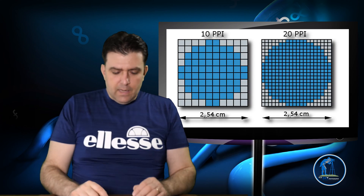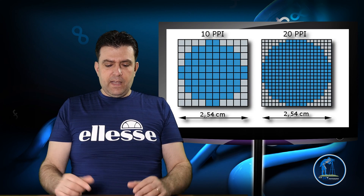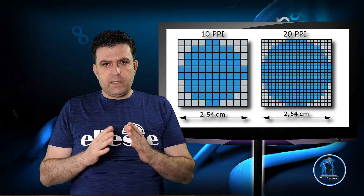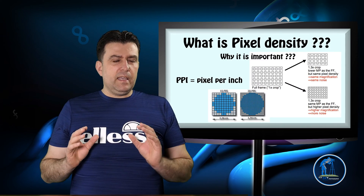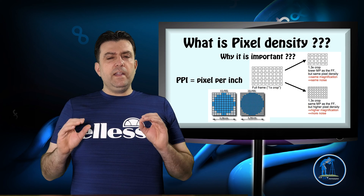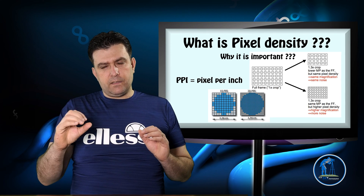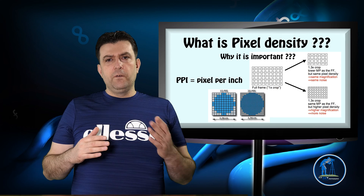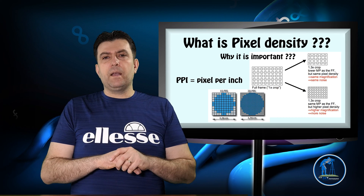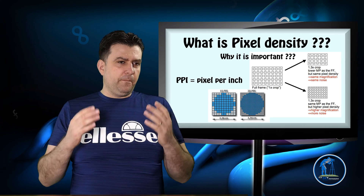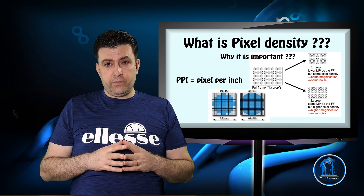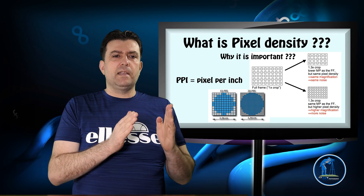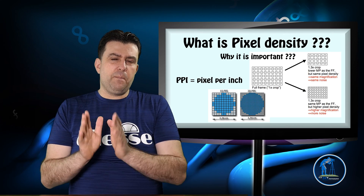Large sensors have less pixel density and smaller sensors have higher pixel density if the megapixel count is the same. For example, a 24 megapixel APS-C sensor has roughly the same pixel density as a full-frame 40-42 megapixel sensor — like the Sony a7R Mark II, which has a 42 megapixel full-frame sensor.